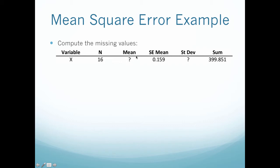It tells you that I have a random variable X, a sample size 16, a mean that I'm supposed to calculate, a standard error of the mean which is 0.159, and a standard deviation that I also have to solve, and the sum of 399.851. Once again, we're supposed to calculate the missing values. I have an N equal to 16, a standard error of the mean which is 0.159, and a sum equal to 399.851. It's up to you to remember what sum means—it's just the summation of each of my individual values.